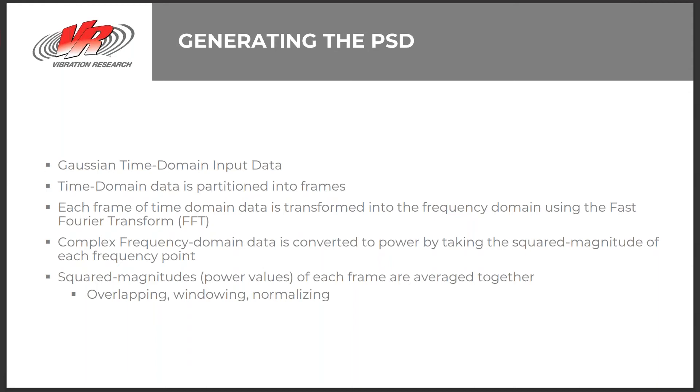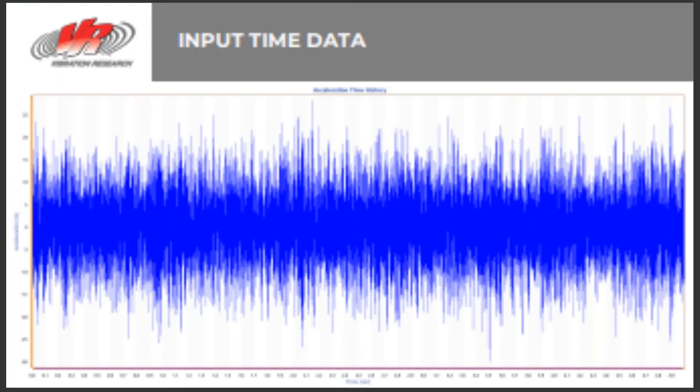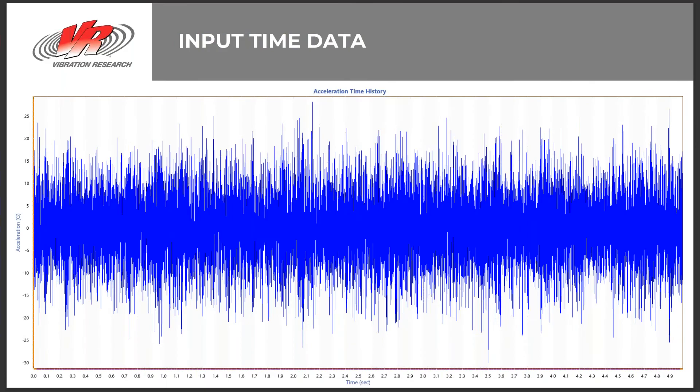Here we have a five-second random waveform. This data is difficult to look at. There's no real valuable information that can be observed from this graph. Maybe that the peak acceleration is at or near 30 Gs. It's difficult to determine much more than that from this particular graph. In order to have a better understanding of what is contained in the data displayed, we need to convert into the frequency domain.